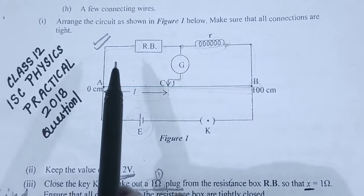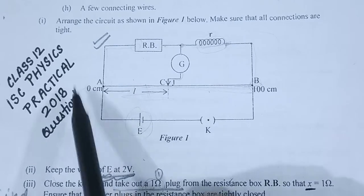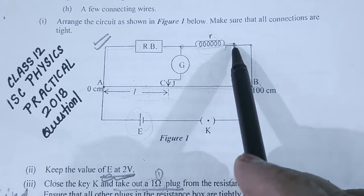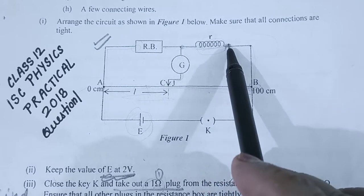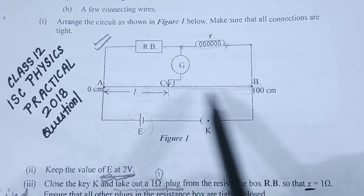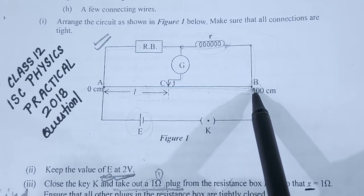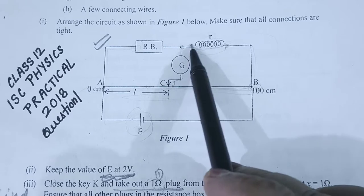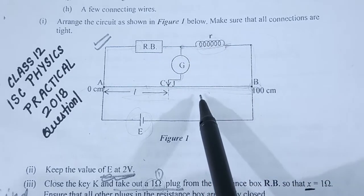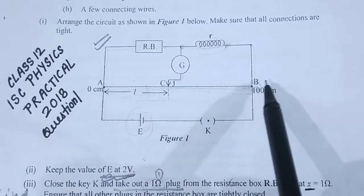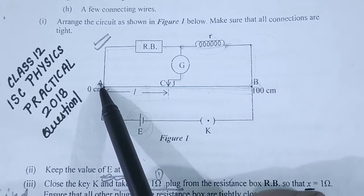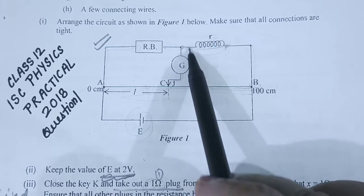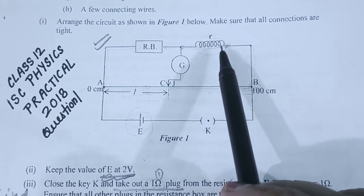Let us see the circuit. In this circuit we have a resistance box and a 50 centimeter resistance wire. The resistance wire AB has a resistance of 4 ohm per meter, so if it is 4 ohm per meter and the wire is 50 centimeters, then obviously the resistance will be 2 ohm.